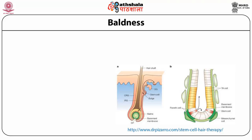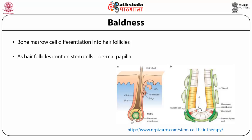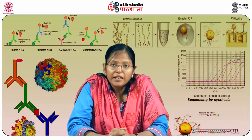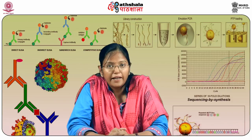One of the interesting facts about stem cell therapeutics is that it can also treat baldness. Bone marrow cells can be differentiated into hair follicles, and since hair follicles contain stem cells in the dermal papilla region, stem cells from existing hair follicles can be transplanted into a bald person's head, where they can multiply and form new follicles, resulting in regeneration of hair.